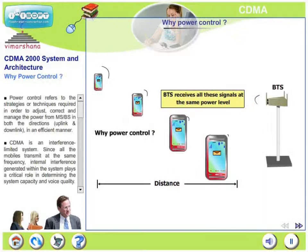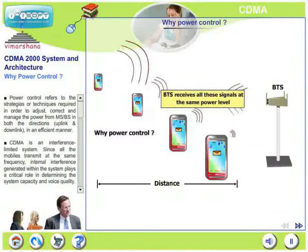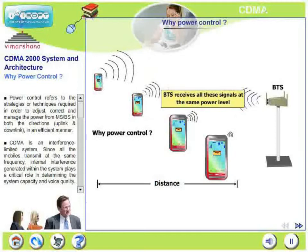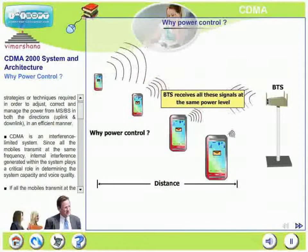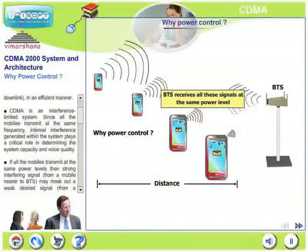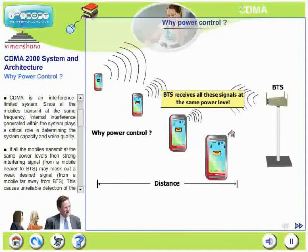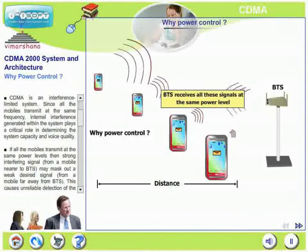Let us look at various aspects of a typical CDMA power control. Power control refers to the strategies or techniques required to adjust, correct, and manage the power from the mobile station to the base station in both directions — both uplink and downlink — in a very efficient manner. CDMA is an interference-limited system. All mobiles transmit on the same frequency, so internal interference is generated among active mobiles, which plays a critical role in determining system capacity and voice quality.